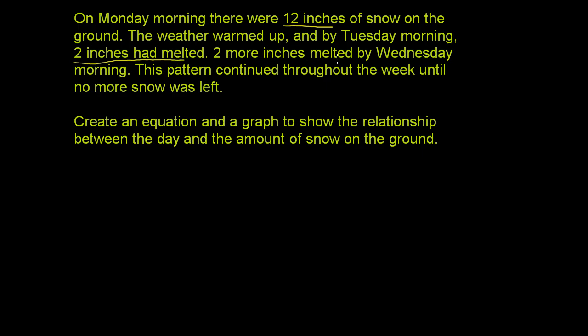Two more inches melted by Wednesday morning. This pattern continued throughout the week until no more snow was left. So essentially we had 12 inches of snow on the ground on Monday, and every day after that, two inches melted. After Tuesday, you'd have 10 inches, and after Wednesday, you'd have 8 inches, and that pattern continued.